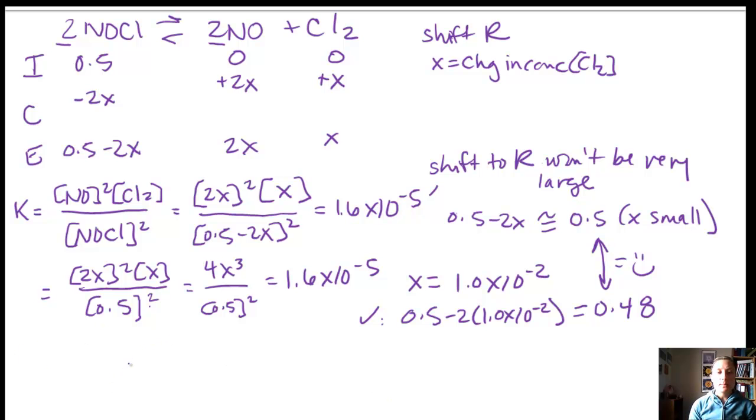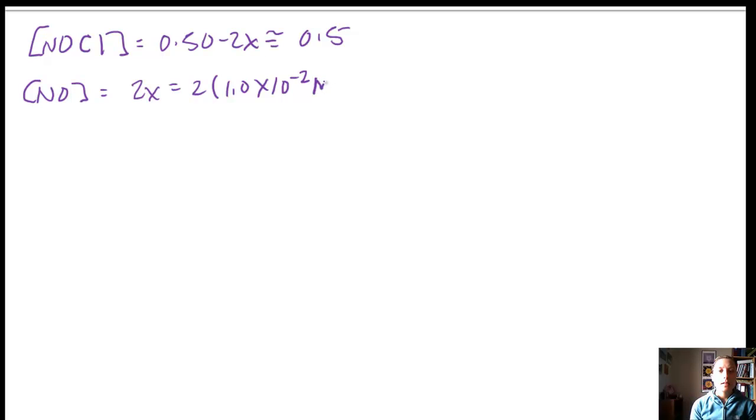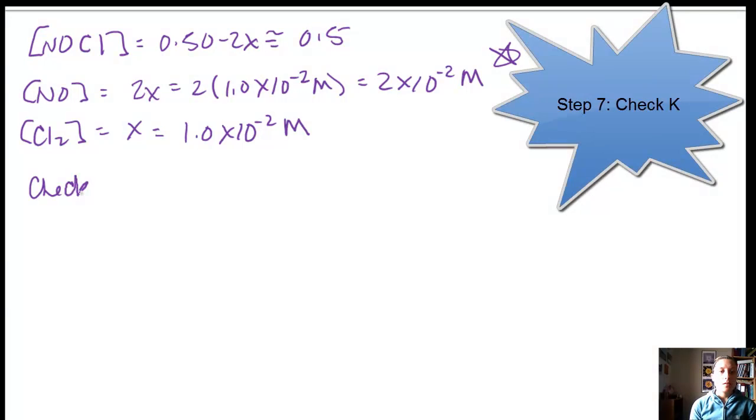Now what we need to do is calculate our equilibrium concentrations. So our equilibrium expression for NOCl was 0.5 minus 2X. And we said that that was approximately equal to 0.5. Concentration of NO, we said was equal to 2X. So this is 2 times our X value, which we said was 1 times 10 to the negative 2. And so that gives us 2 times 10 to the negative 2 molarity for NO. And then our Cl2 was equal to X. So we're going to say that's equal to our 1 times 10 to the negative 2 molarity. So these are equilibrium concentrations.